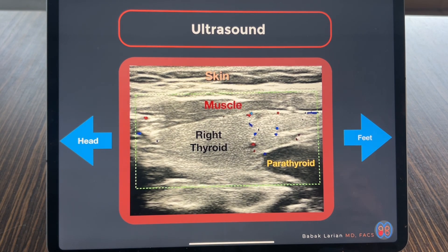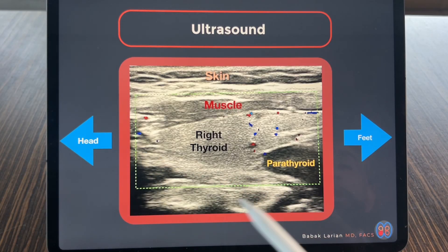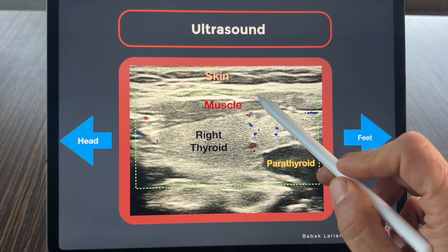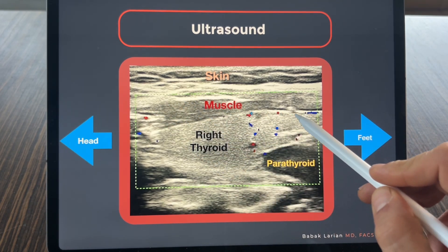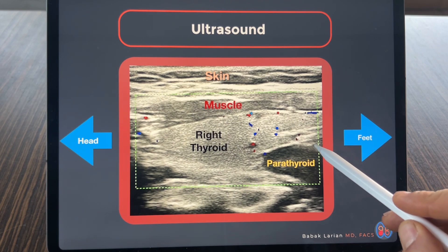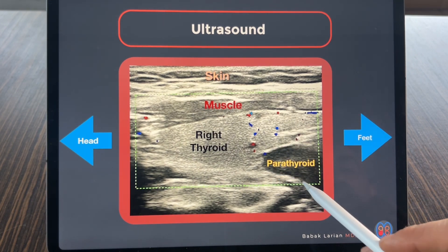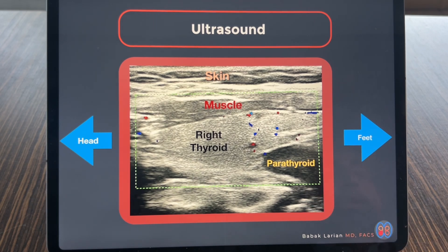When you look at an ultrasound — and this is an ultrasound I did in my office — you're seeing the parathyroid in this orientation, with the head being up and feet pointing down. This is the skin layer, the muscle layer above the thyroid. This is the thyroid gland right there. You can see the parathyroid — parathyroid appear dark on ultrasound and have a little bit of a white shadow following them.